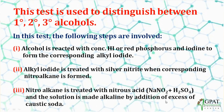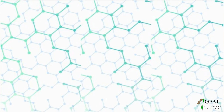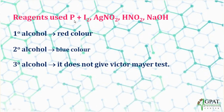When we perform these three steps, colors are observed that allow us to differentiate primary, secondary, and tertiary alcohols. The reagents used are: phosphorus with iodine, AgNO₂, HNO₂, and NaOH. If the alcohol is primary, a blood red color is observed. If secondary, a blue color is observed. If tertiary, no color is produced — the tertiary alcohol does not give a positive Victor Meyer test.